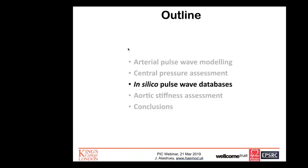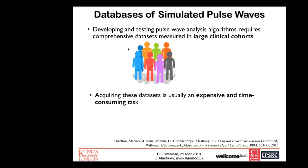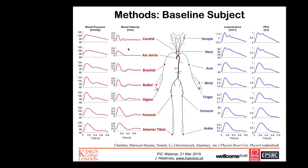This central pressure assessment project benefited greatly from using in silico pulse wave databases. Developing and testing pulse wave analysis algorithms requires comprehensive datasets measured in large clinical cohorts, but acquiring these is usually expensive and time-consuming. To facilitate this, we created databases of simulated pulse waves representative of a sample of healthy adults. The latest dataset contains several types of pulse waves at common measurement sites for over 4,000 virtual subjects aged 25 to 75 years old.